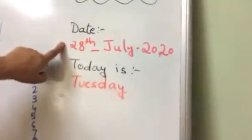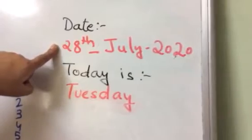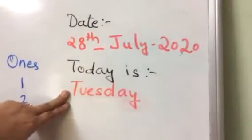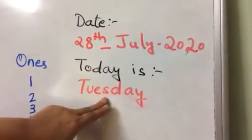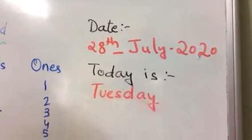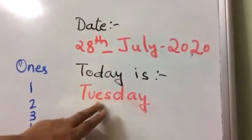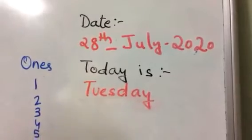Aaj ham kya kareenge? Aaj ham new topic start kareenge — carry forward, thik hai? But before that, let us see. Aaj kya date hai? Aaj hai 28th July 2020. Aur day kya hai? Tuesday — T-U-E-S-D-A-Y. Ek baar meri saath bolo: T-U-E-S-D-A-Y, Tuesday. Very good.